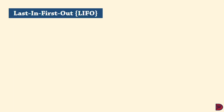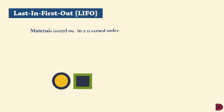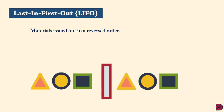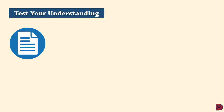The Last In First Out (LIFO) method is the opposite of FIFO. It assumes that inventory is issued in reverse order, meaning the last purchased or manufactured is the first to be sold or issued. Therefore, any remaining inventory at period end will be those earliest received and will be valued at their earlier cost.